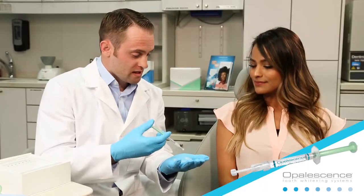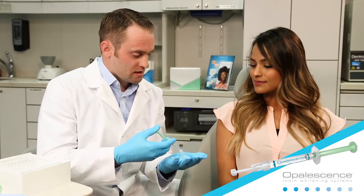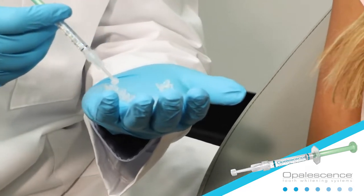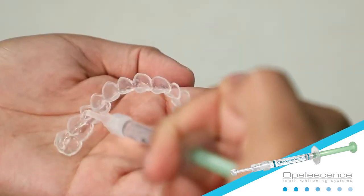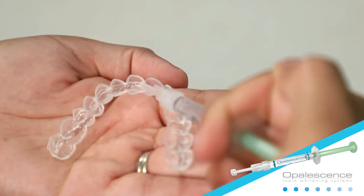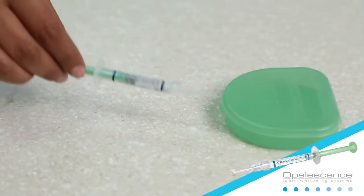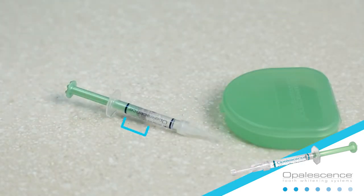Demonstrate how to load the tray by expressing one continuous bead of gel approximately halfway up from the incisal edge on the facial side of the tray from molar to molar. This should use about one-third to one-half of a syringe.